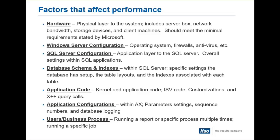One of the roles I've had in the past is I used to work for Microsoft as a premier field engineer and a TAM, and a lot of these things were some of the issues that we saw early on in the 2009 and 2012 days of AX. Application configuration covers your application code — the kernel and the application code, ISV layers that are coming into effect, customizations, and different query calls. And the application configuration covers the items inside AX: parameter settings, sequence numbers, database logging turned on. And the last part, which a lot of people don't realize, is the user or the business process. It's not always the system — sometimes it's the person touching the keyboard that's causing issues.